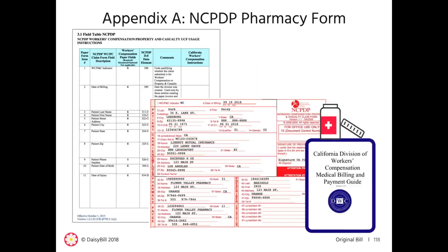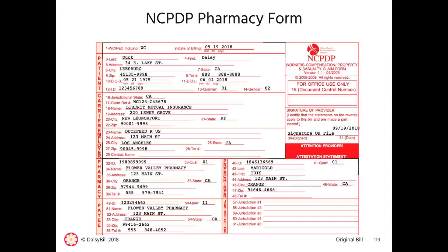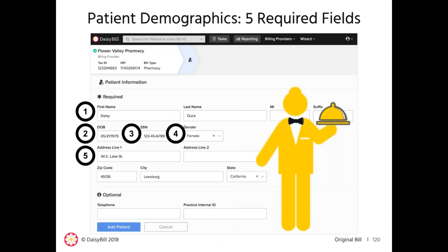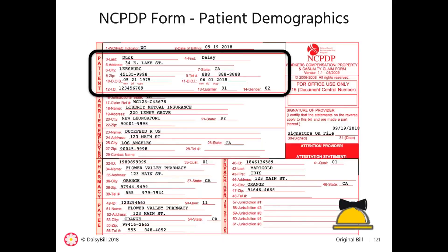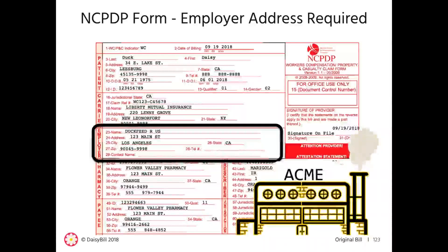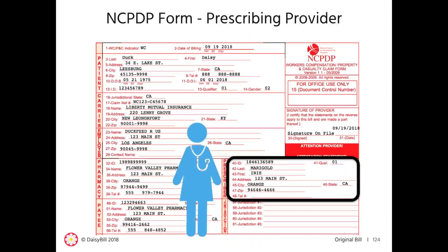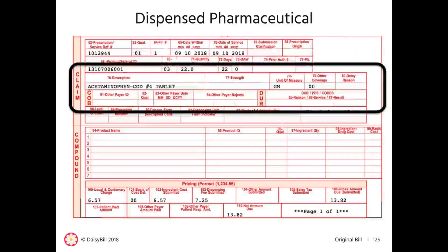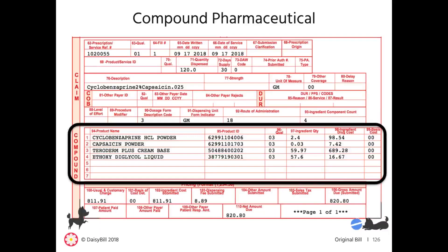Now let's review the DWC requirements for the NCPDP form for pharmacy services. The DWC requires pharmacies to submit bills using the NCPDP form. This form requires the same five patient demographics, including the patient social security number. Unlike the other forms, the DWC requires the employer's address. The DWC expects the prescribing provider information in the prescriber section. For dispensed pharmaceuticals, fill out the claim section; for compound pharmaceuticals, fill out the compound section.